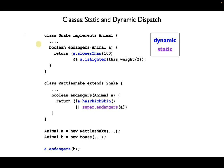Here's a concrete example. First, we have a class snake, which implements another class, which we're not showing, called animal. Inside snake, we have a method called endangers, which takes another animal and says whether or not the snake endangers that animal. And this one returns a boolean.